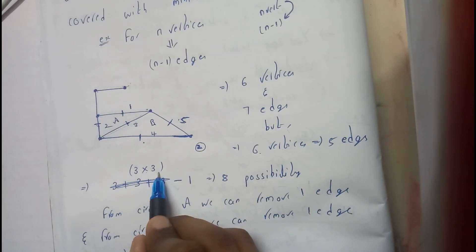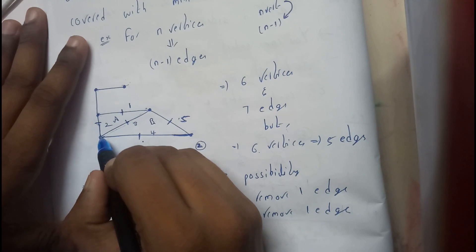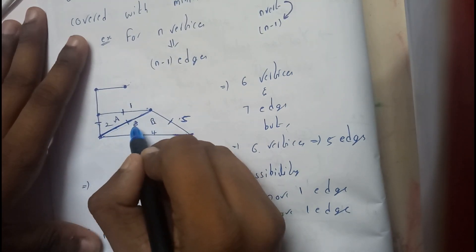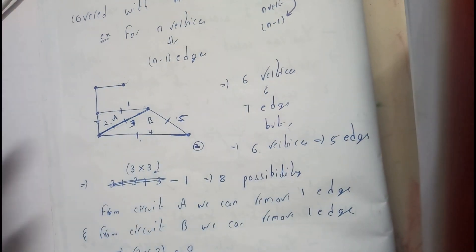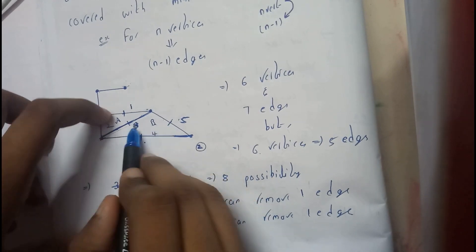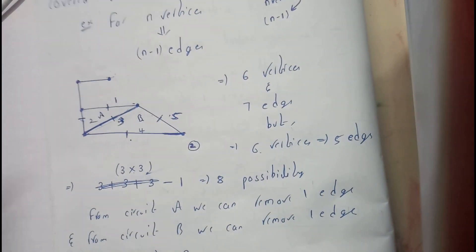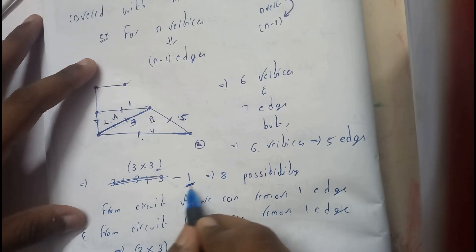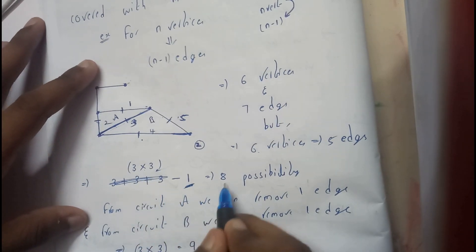But when we see it closer, in between A and B we are having this edge 3 as a common one. So once if we remove in part A, if we remove 3 in B we cannot remove 3 again, so there is a loss of 1 chance.